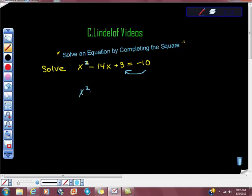So I would just start my investigation as if I did not know I was going to be completing the square. And I would add 10 to both sides, and I'd get plus 13 is equal to zero.